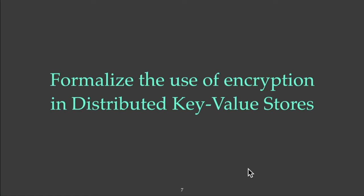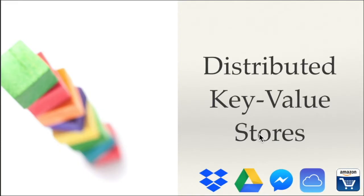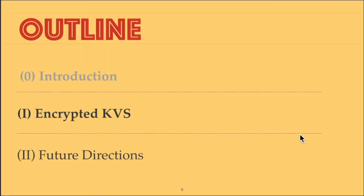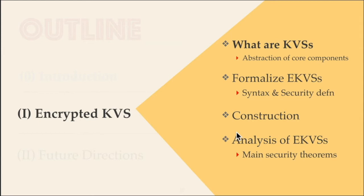In this talk, I'll discuss how we can formalize the use of encryption in distributed key value stores. It turns out that most of the systems I mentioned earlier — like Amazon's cart, Google Drive, or Dropbox — use distributed key value stores as their building block. Because these key value stores are such basic building blocks, if we can get encryption into them, we can build all sorts of privacy-preserving storage systems on top of them. This brings me to how we can design and analyze encrypted key value stores.